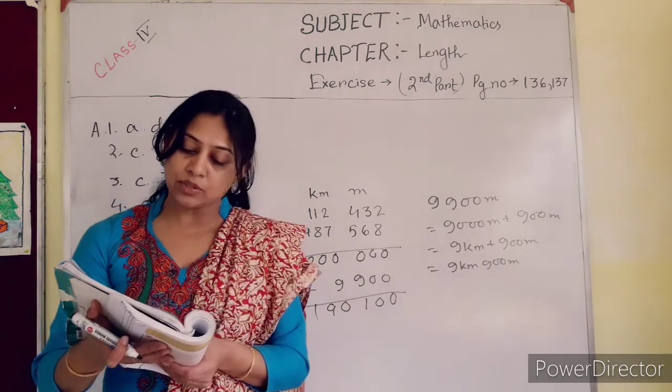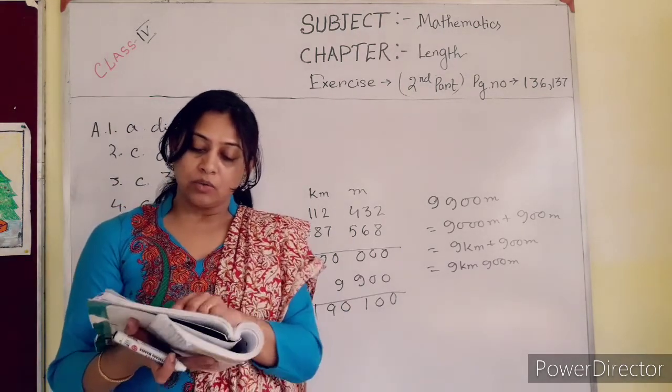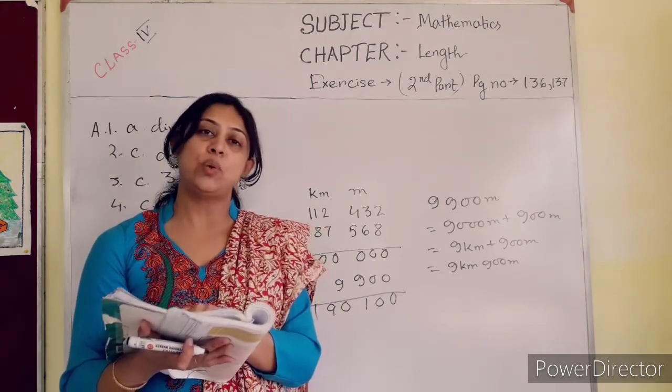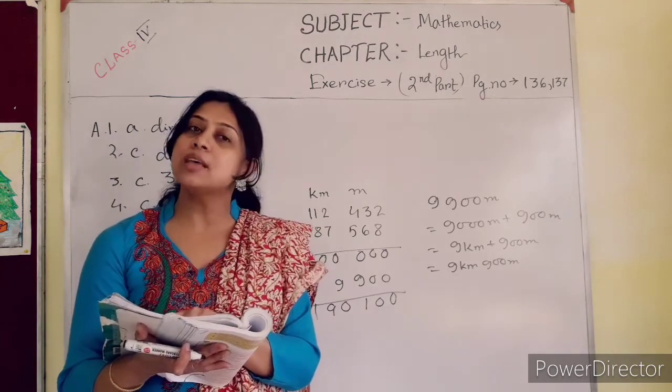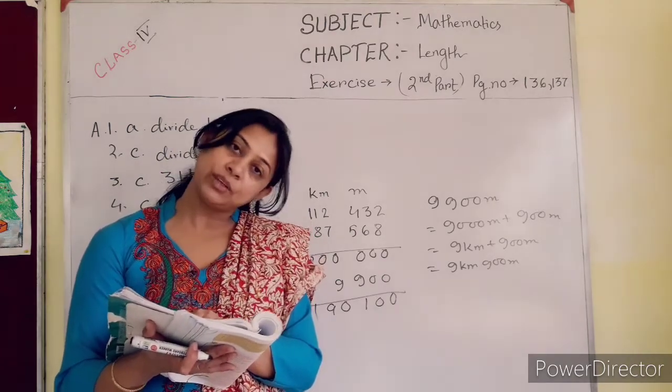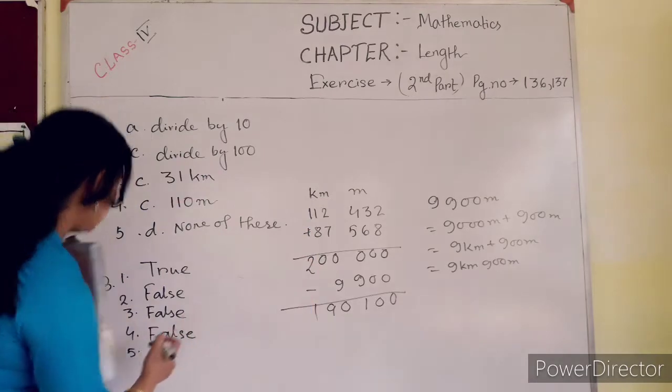To add or subtract two lengths, you must first represent them in same unit. Of course, you have to represent them in same unit. Otherwise, you cannot add or subtract. Clear, so this one is true.